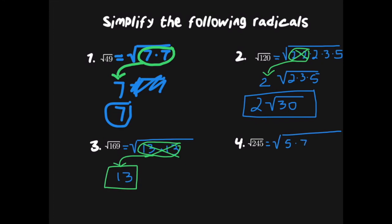The prime factorization of 245 is 5 times 7 to the second power, which means 7 times 7. Every time we find a pair, one comes out. So one 7 comes out of the radical. The pair of sevens cancels inside, and the only thing left inside is a 5, so this remains the square root of 5. The answer is 7 times the square root of 5.